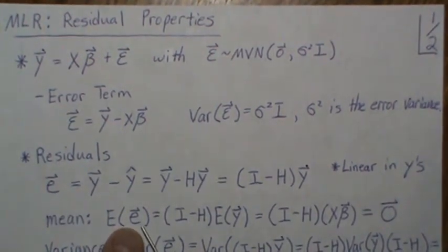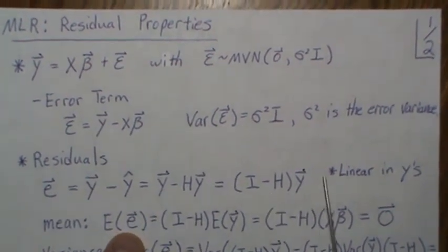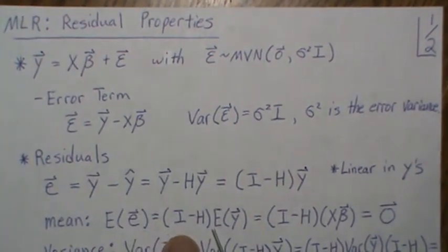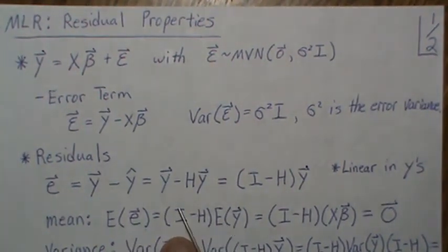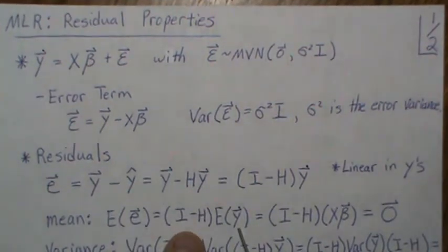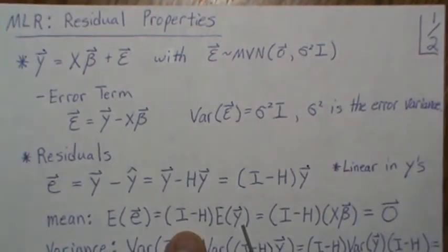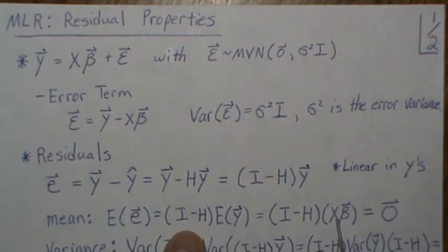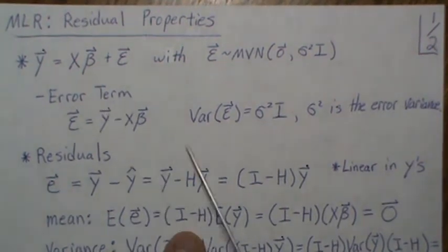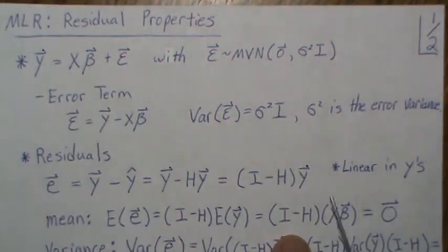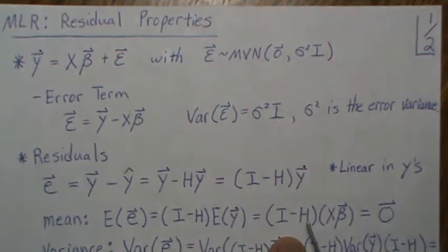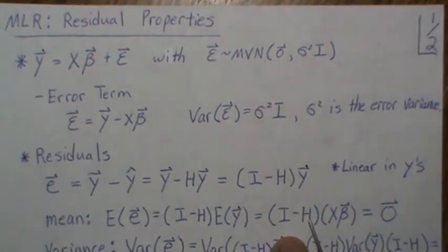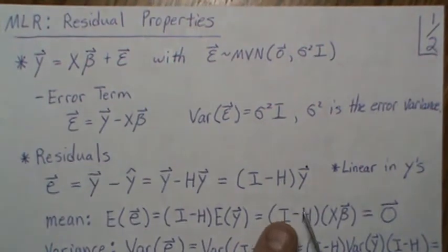So let's look at the mean of the residuals. We plug in what we know about the residuals and take the expected value. We factor out this constant. The mean of the vector y is X beta, and then this is zero.